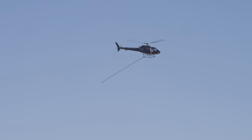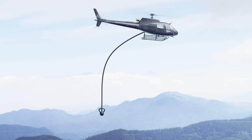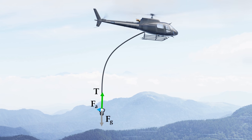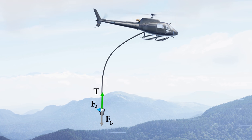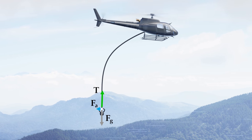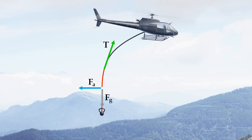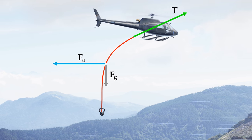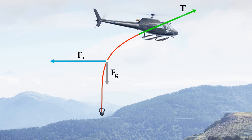To understand why the rope makes this shape, we can use the same analysis as before. But now we need to add a large weight to the end of the rope. At the bottom, the tension needs to be almost vertical to support the weight of the kettlebell, which has a lot of weight but not much air resistance. As you go up the rope, the ratio of total air resistance to weight for everything beneath increases, so the rope turns more horizontal in order for the tension to balance out that increasing air resistance.